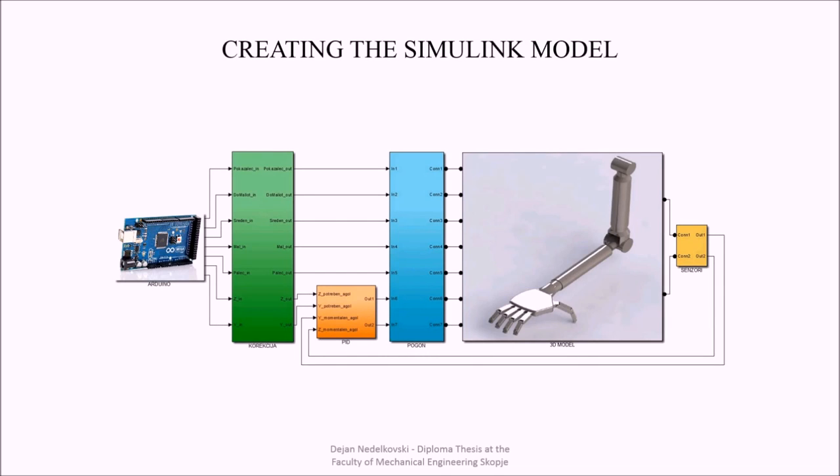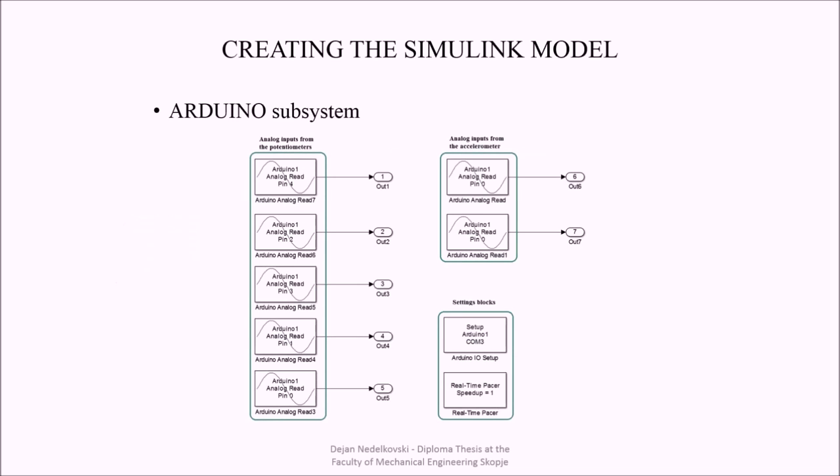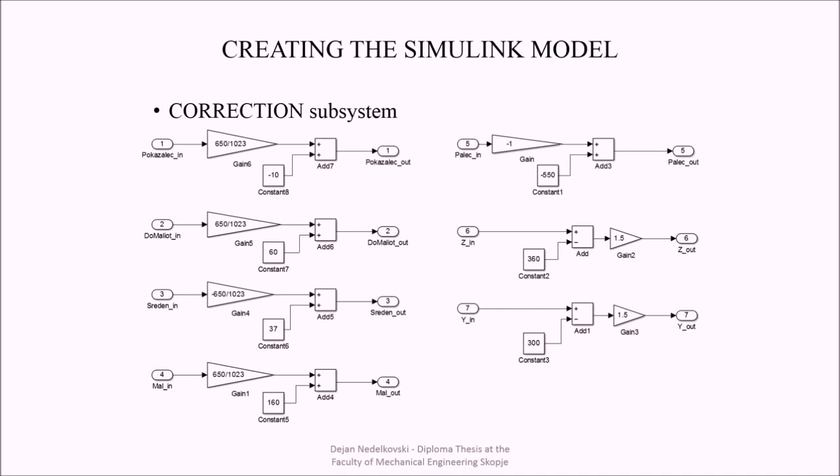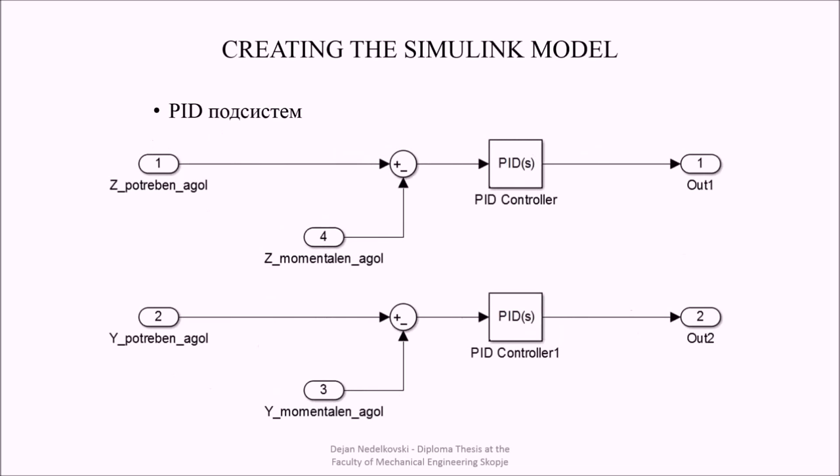I organized my Simulink model into 6 subsystems. The first subsystem consists of Arduino analog input blocks for reading the values of the potentiometers and the accelerometer. In the second subsystem I am doing a correction of the analog readings according to my needs. In the third subsystem I am using a PID controller for getting smoother movements.